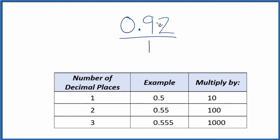What I want to do is get this 0.92 to a whole number. And I see I have two decimal places. So two decimal places, if I multiply that by 100, that'll give me a whole number. 100 times 0.92, that equals 92. So that's our whole number.